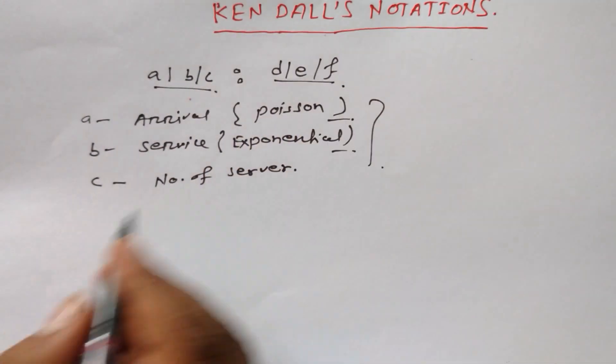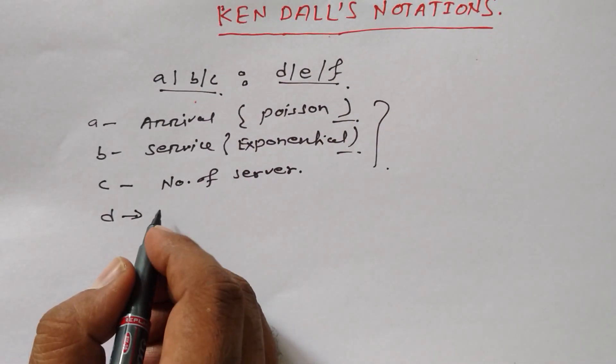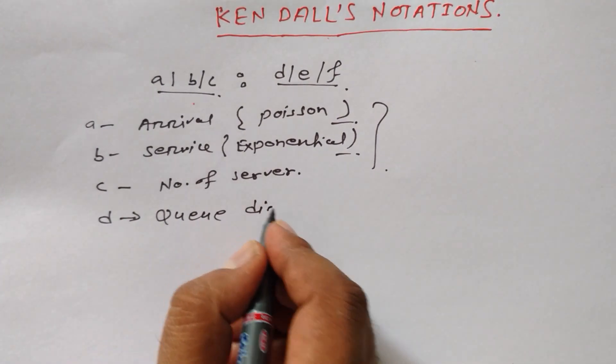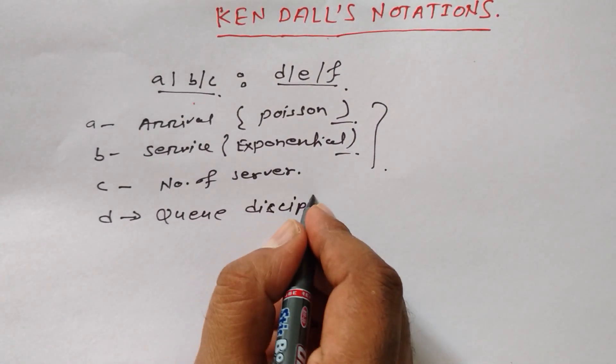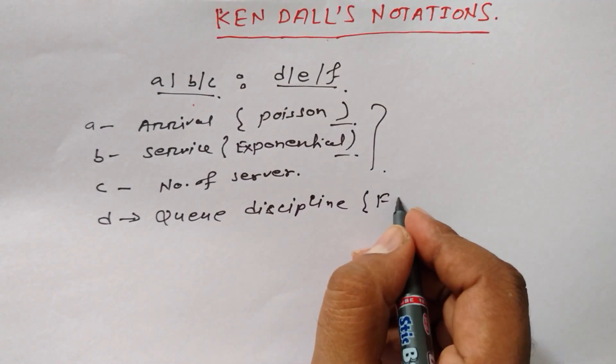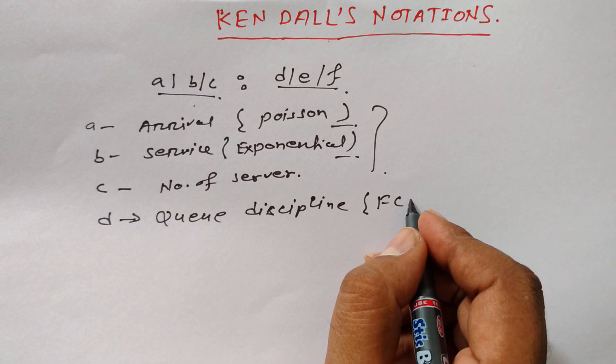Now we are going to the next three. D is for queue discipline. What are queue disciplines? First come first serve.